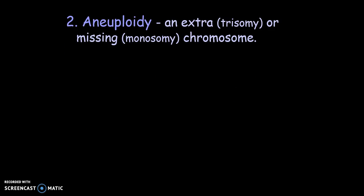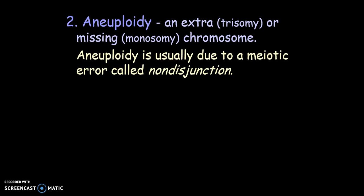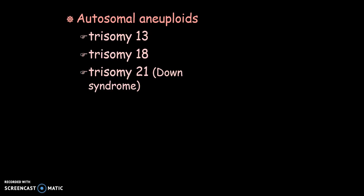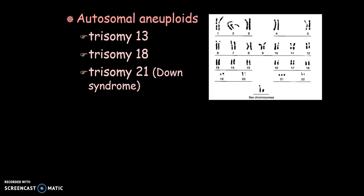Aneuploidy is when you either have an extra chromosome or are missing a chromosome. This occurs when, during anaphase of meiosis I, homologous chromosomes don't separate correctly — one cell ends up missing a chromosome and another has an extra. Non-disjunction happens during meiosis when a chromosome pair fails to separate, and the resulting sperm or egg either has an extra copy (trisomy) or a missing copy (monosomy). There are some autosomal examples: trisomy 13, trisomy 18, and trisomy 21, which all have an extra chromosome at those positions. Trisomy 21 is the most common and that's Down syndrome.